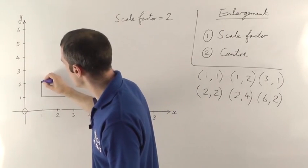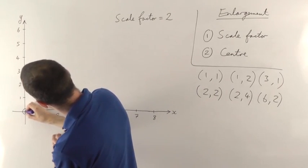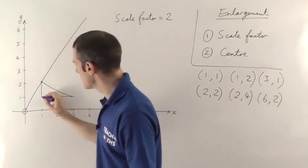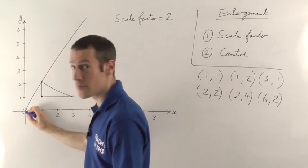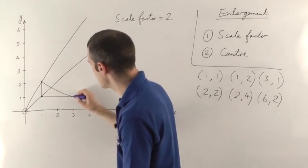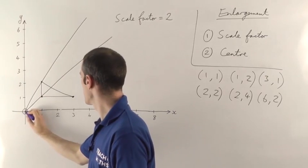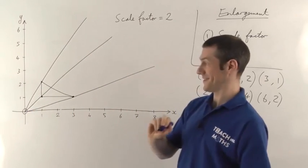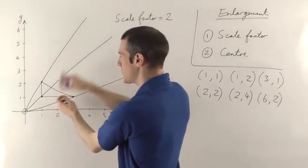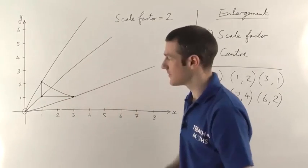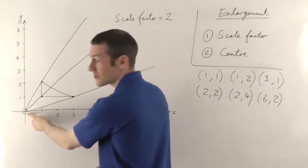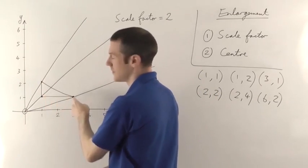So if you've got one corner, you draw a straight line from there, through the corner, and then off into the distance. You do the same thing with each corner — from the centre of enlargement, through the shape, off into the distance — drawing lines through all three corners. If it's a square you'll be drawing four lines; with three corners you draw three lines. Then with a ruler, you measure the distance from your centre of enlargement to each corner of the shape.